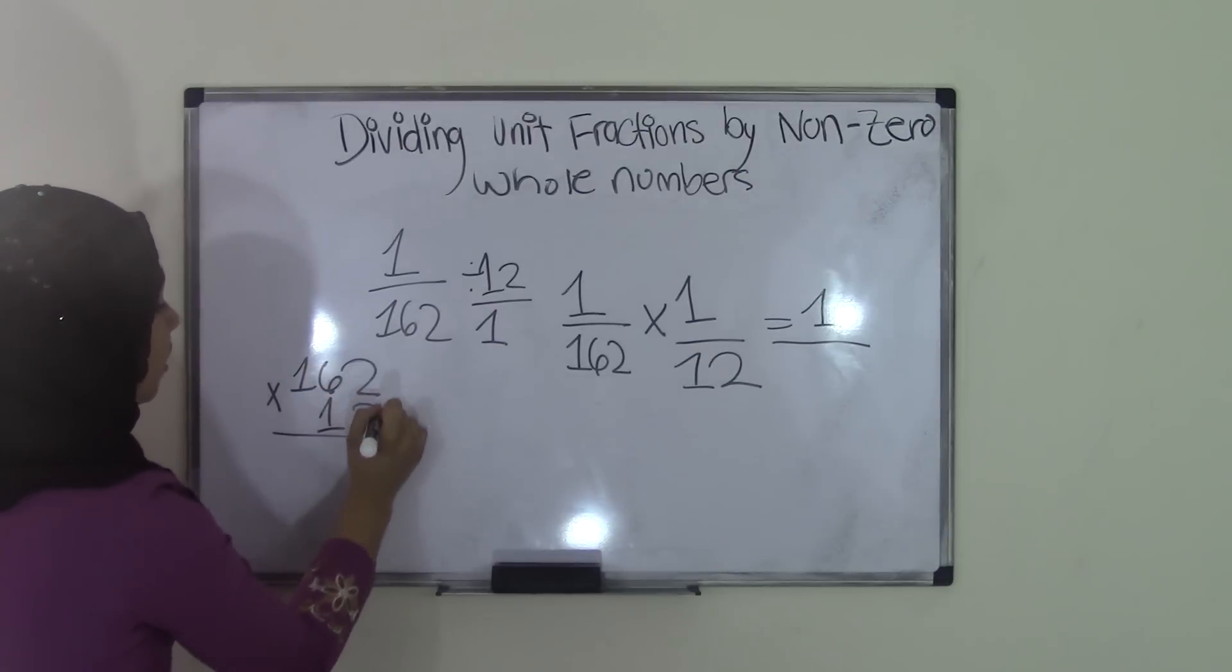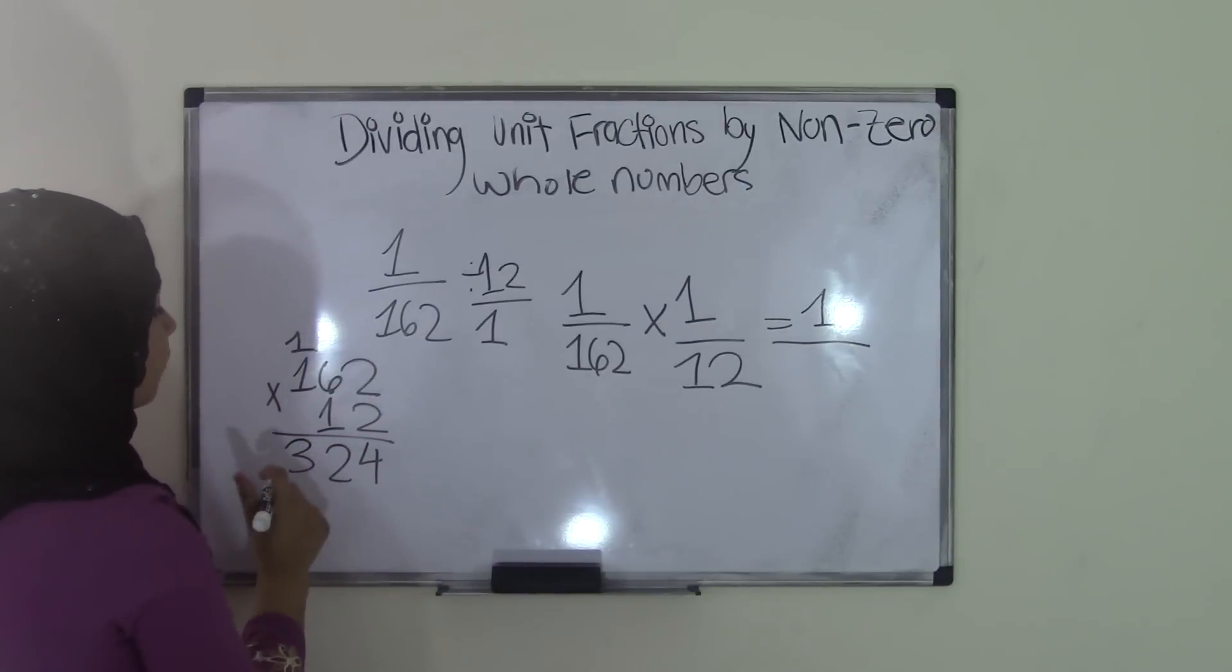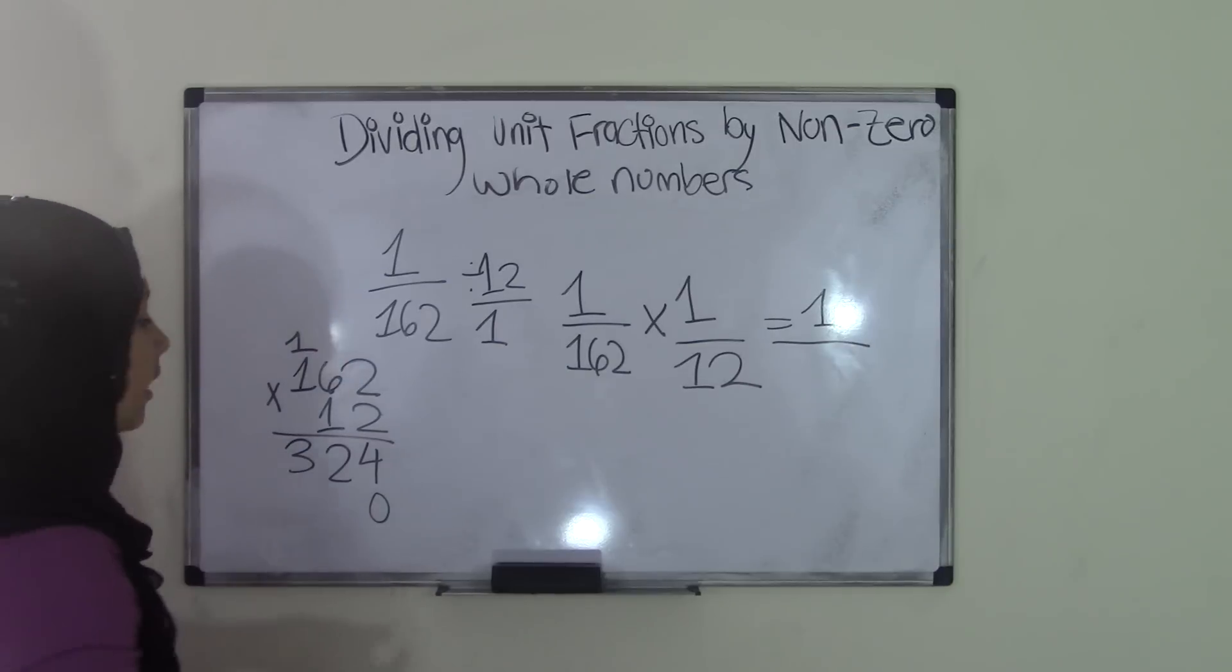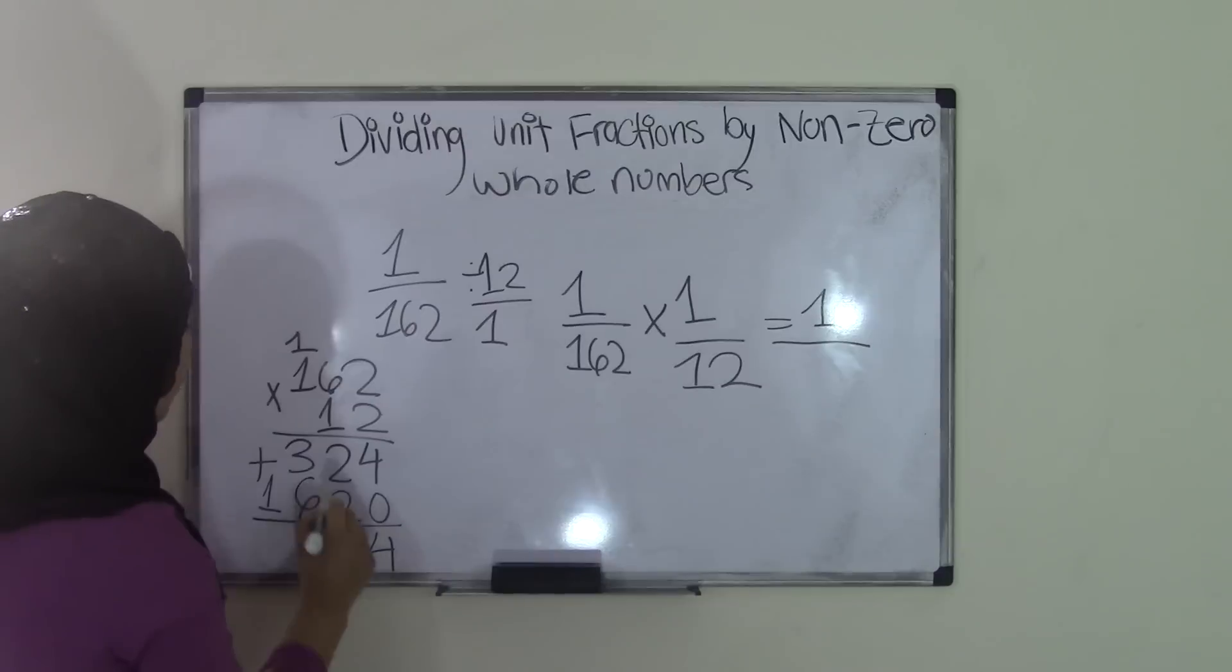Now remember, 2 times 2 is just 4. 2 times 6 is 12. Carry the 1. 2 times 1 is 2. Plus the 1 equals 3. So we have 324. Now we're going to add a 0 here because we're moving place value, right? So now this becomes intense, so we have to add 1 0 because 10 has 1 0, right? So 1 times 2 is 2. And then 1 times 6 is 6. 1 times 1 is 1. Add them together. 4 plus 0 is 4. 2 plus 2 is 4. 3 plus 6 is 9. And then 1.